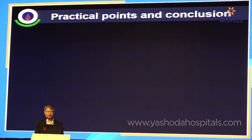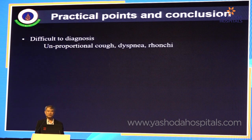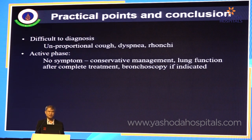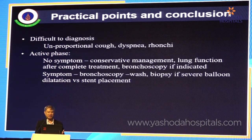My conclusions and practical points: this disease is very difficult to diagnose. You can suspect it if a tuberculosis patient presents with disproportionate cough — they cough a lot but have very little lesions on chest X-ray — or presents with dyspnea and you can hear the wheeze. If the patient is in the active phase with no symptoms, conservative treatment is mandatory, and lung function should be done after complete treatment with bronchoscopy if indicated. If the patient in the active phase comes in with symptoms, bronchoscopy is needed to confirm activity and determine whether balloon dilation or stenting is appropriate.